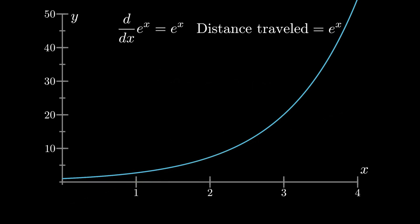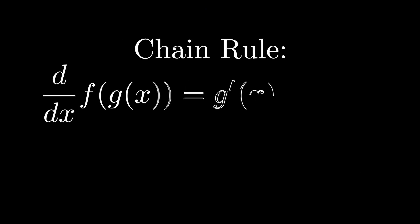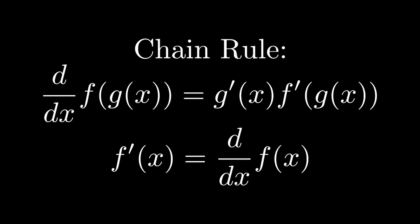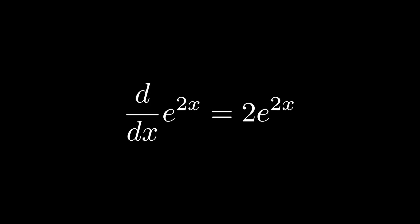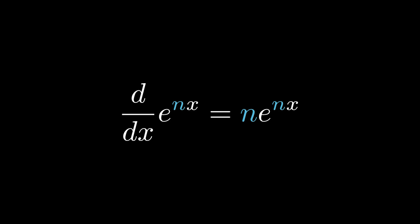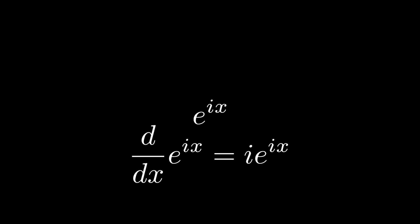What happens if x is multiplied by a constant, say 2? Using the chain rule — a method for finding derivatives of composite functions, where the derivative of f(g(x)) is g′(x) times f′(g(x)) — for e to the 2x, the derivative is 2 times e to the 2x. In fact, for any constant n, the derivative of e to the nx is n times e to the nx. So what happens if n equals i? That means the derivative of e to the ix is i times e to the ix.